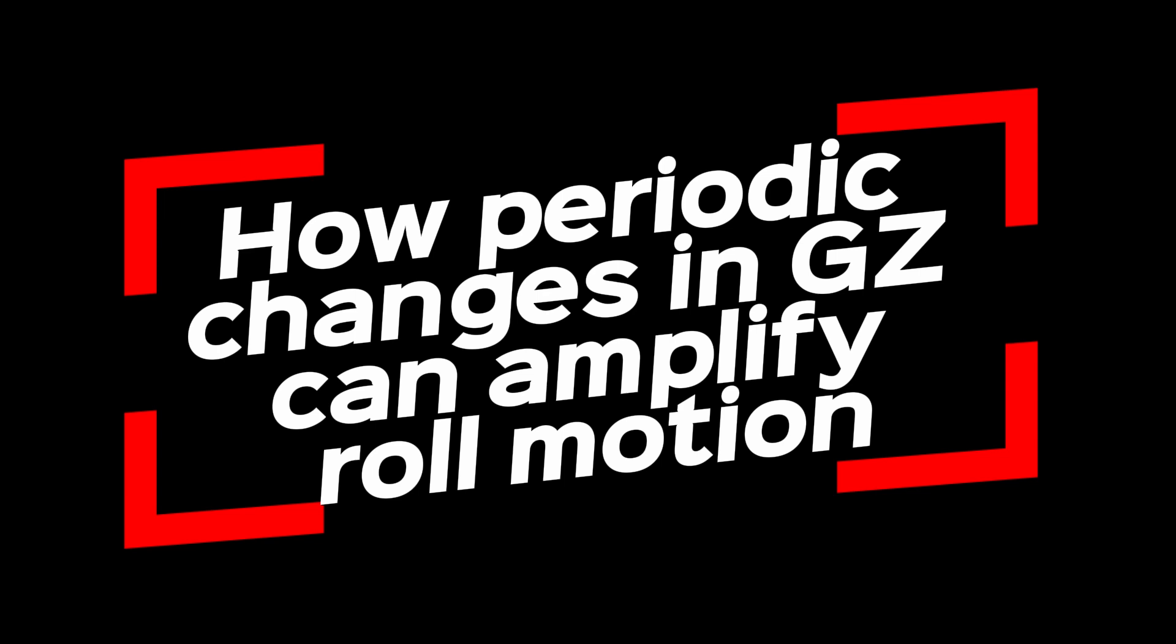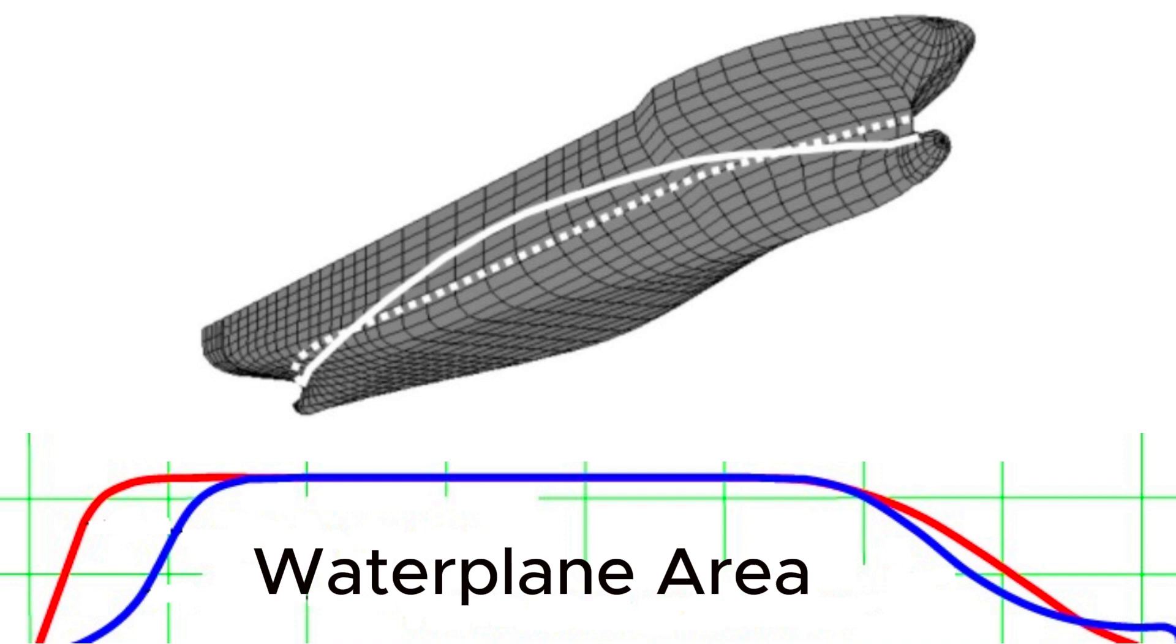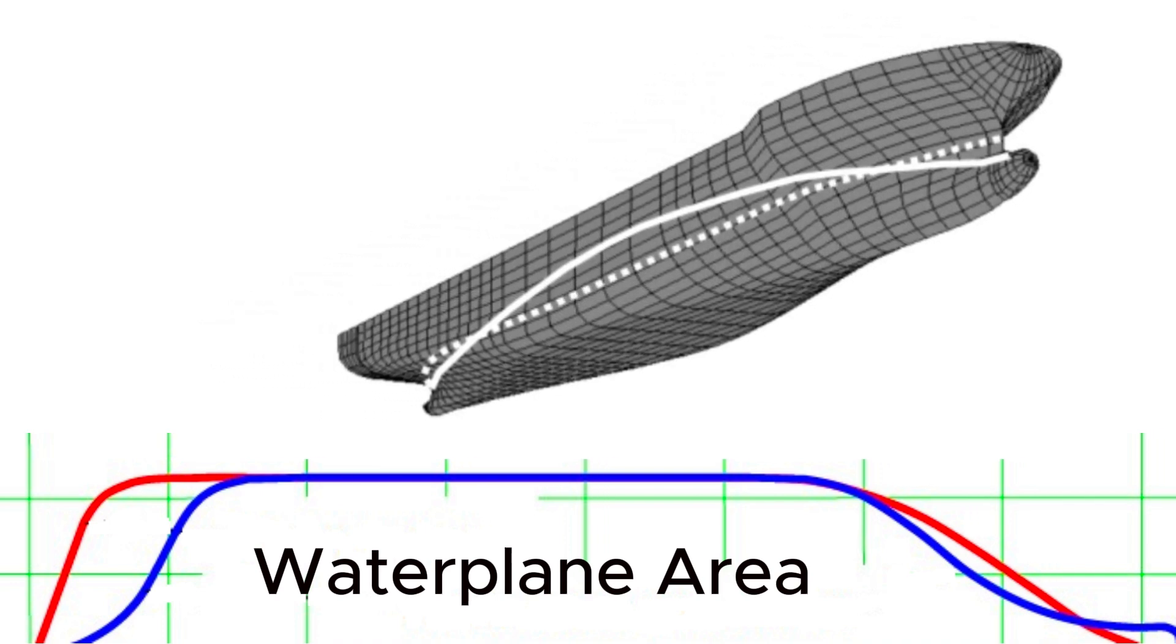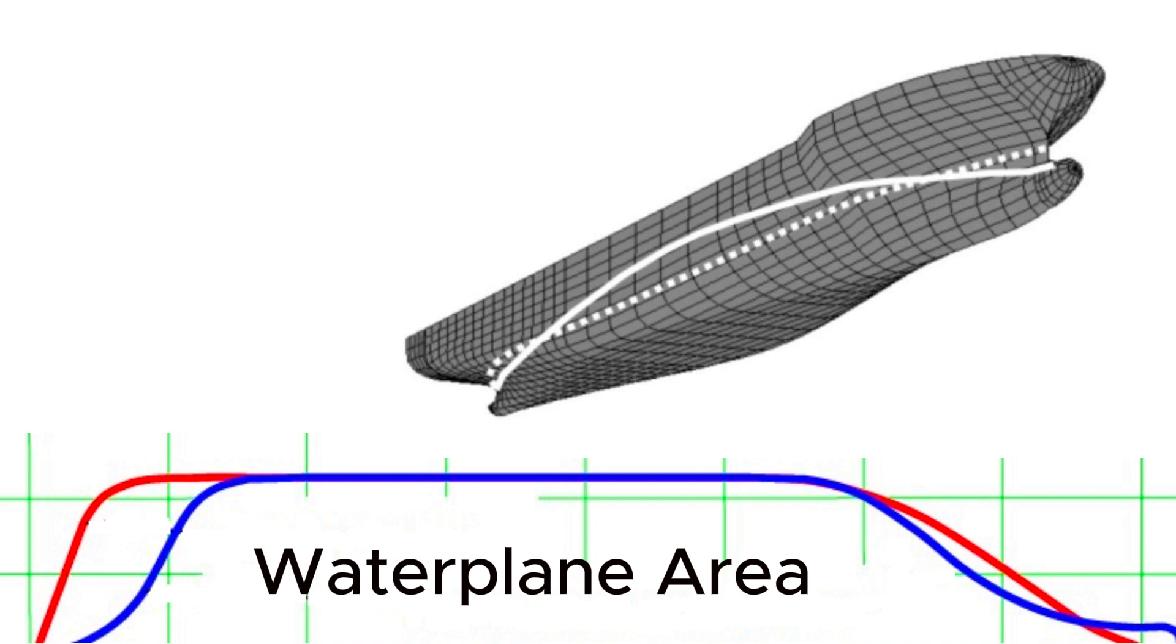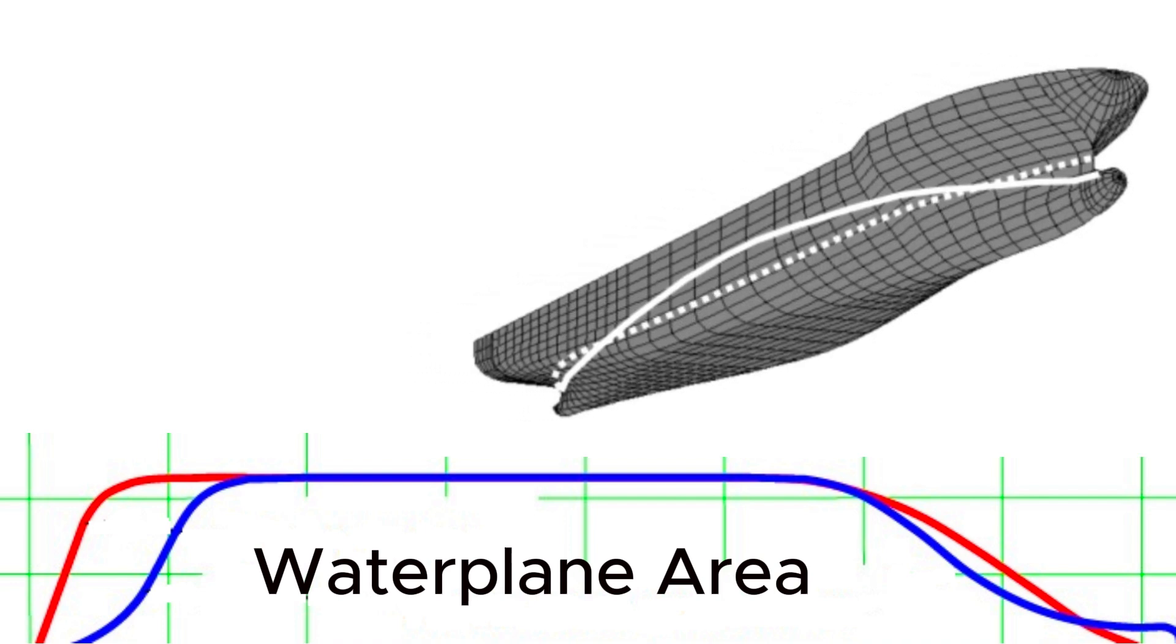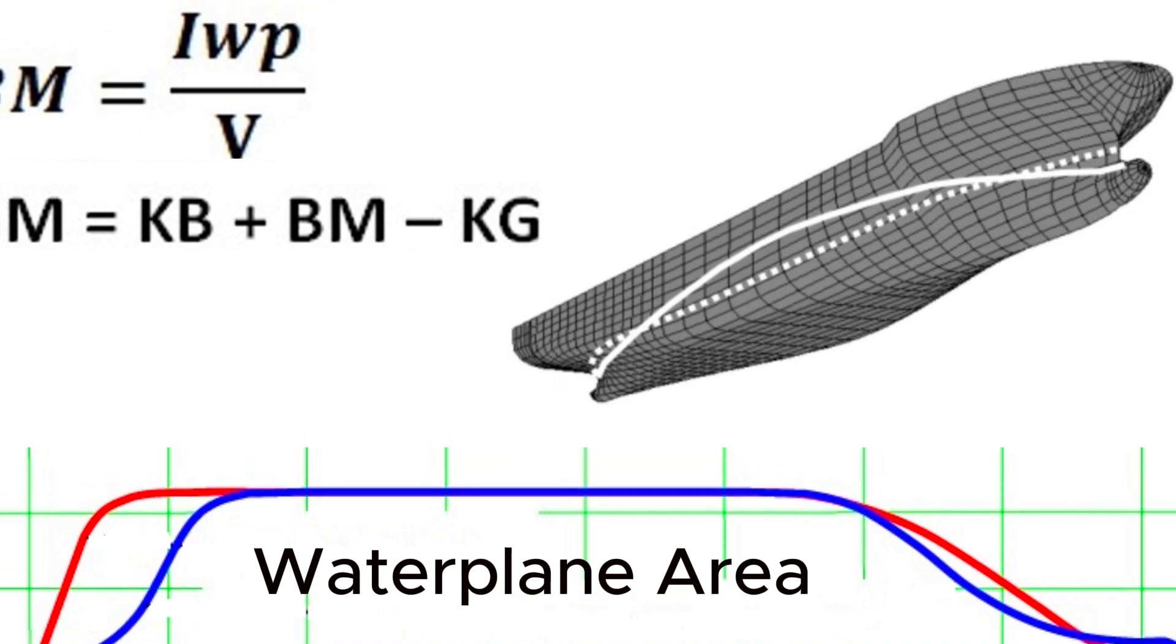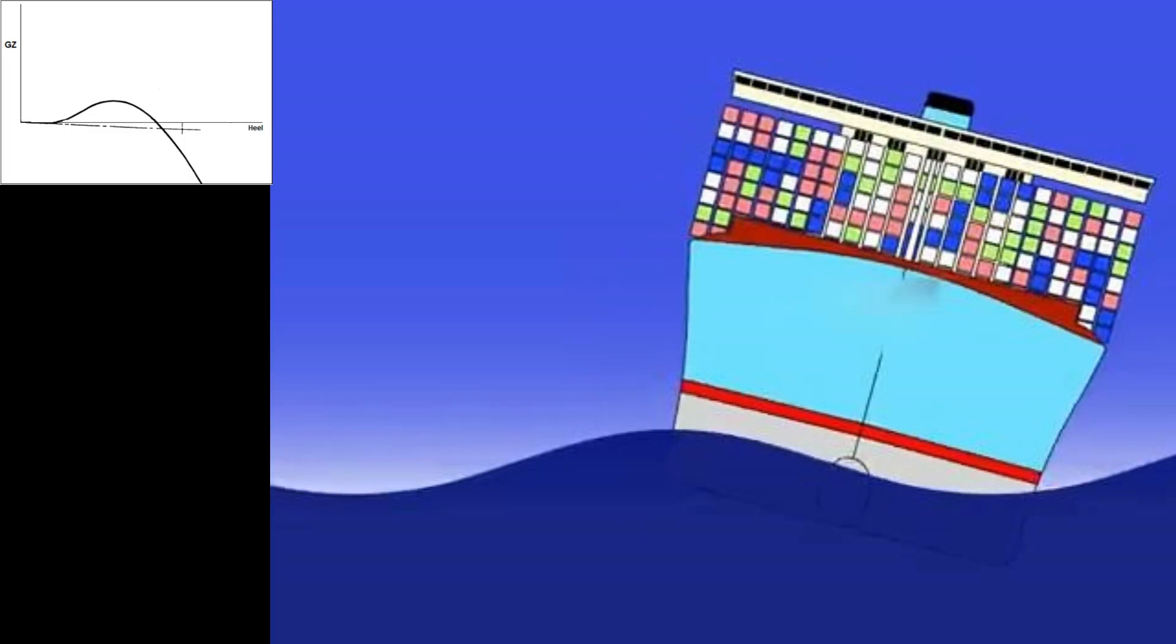As previously explained, when a wave crest aligns with the ship's midship, the water plane area decreases. This water plane area reduction leads to a decrease in the moment of inertia. Consequently, BM is reduced, which ultimately results in a lower GM. As GM is decreased, the ship will start to roll over.